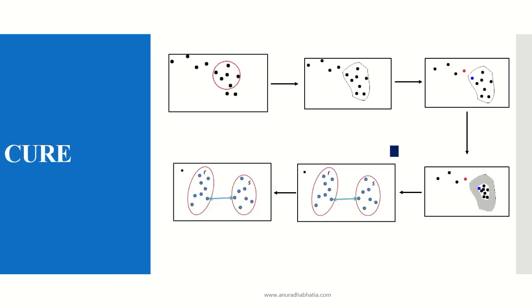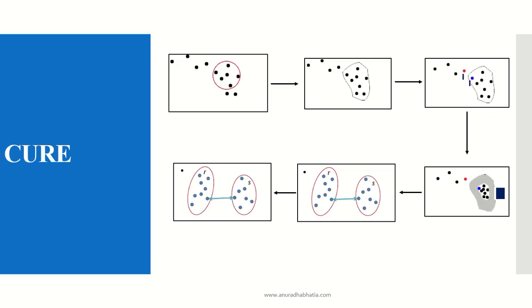This is my cluster algorithm: I have raw data from which I find a cluster, then create a partitioning. With this partitioning, I create two representative points. With these two representative points, I club them together and find the minimum distance between the two. An outlier is identified and removed, and the final cluster is formed.